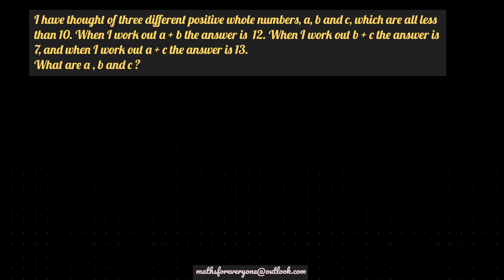So it's saying that A, B and C are positive whole numbers which are all less than 10. When I work out A plus B the answer is 12, when I work out B plus C the answer is 7, and when I work out A plus C the answer is 13. So what are A, B and C? A plus B equals 12, then B plus C equals 7, and A plus C equals 13.